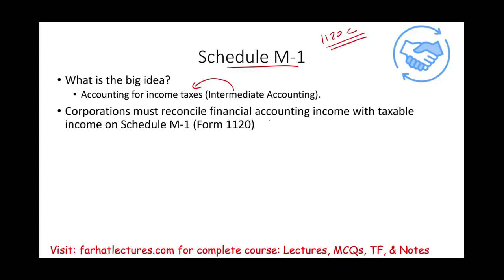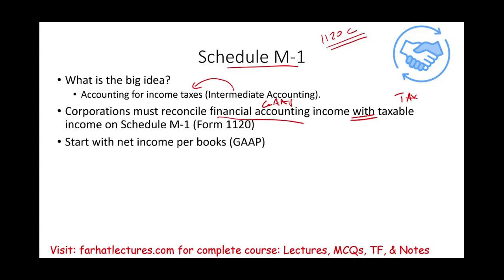The corporation must reconcile financial accounting — which is GAAP accounting — with taxable income on Schedule M-1. Basically, it's a form of reconciliation between GAAP income and taxable income. You always start with GAAP income, assuming you already have your financial statements reported, and then you make certain adjustments. I'm going to go over a few common items — common in the sense that they appear constantly on Schedule M-1 — to help you understand this concept.